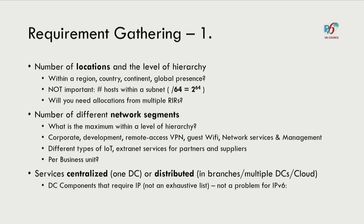The next step is to think about network segments — the different types of networks you support, where your users and devices live, and your cloud connectivity. Are you going to split the prefix by business unit? For a university, it might be by department. Think about what the maximum is within each level — for example, a campus with 10 or 20 buildings, plus a single outlier research site. Also consider your services: they might be on-prem, distributed into branches, or in the cloud. In data centers there are many components beyond servers — containers, top-of-rack switches, PDUs, air conditioning, physical security — all on a /64 for a single segment.